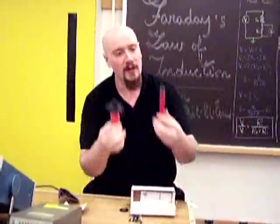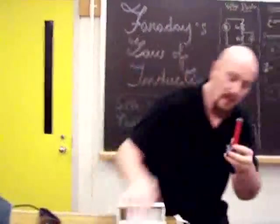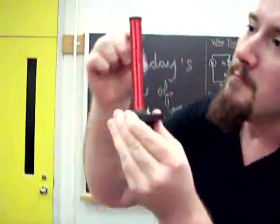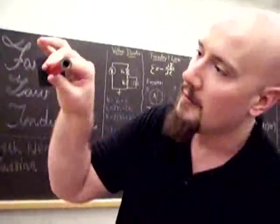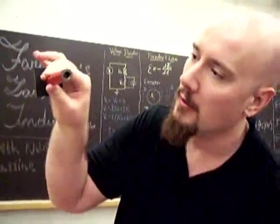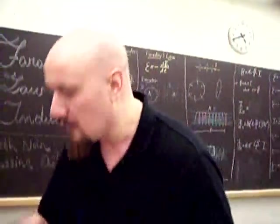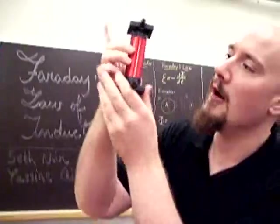So look at what I have here. This is a solenoid - many, many turns of wire around a hollow core. And another one too. More turns of wire.